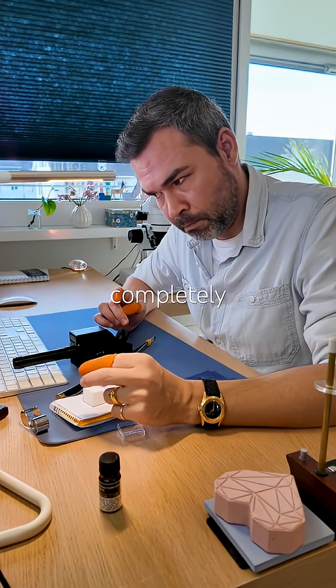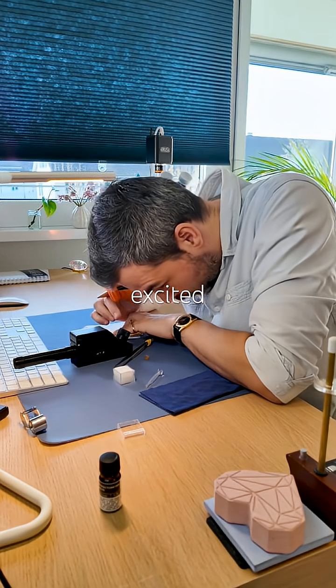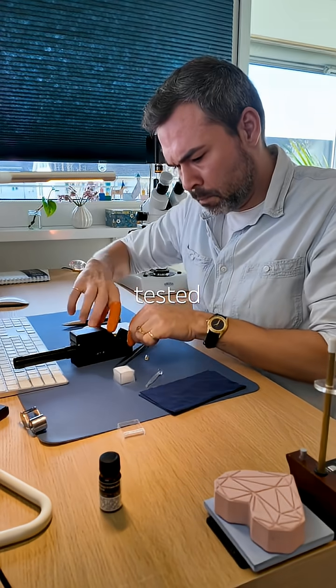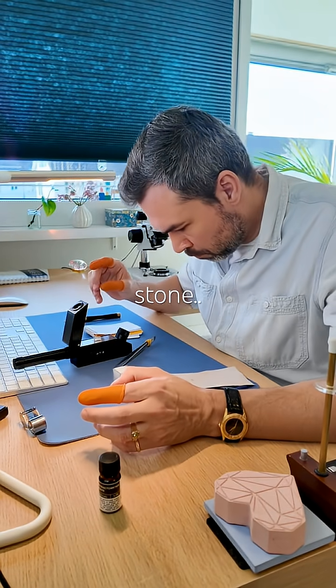The refractive indices are completely out of range for tanburite. The gem geek in me is getting excited, even though there is no happy ending. The rough piece tested perfectly. It is a real tanburite, but the faceted matching stone, not so much.